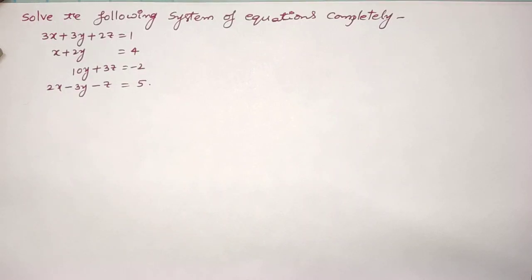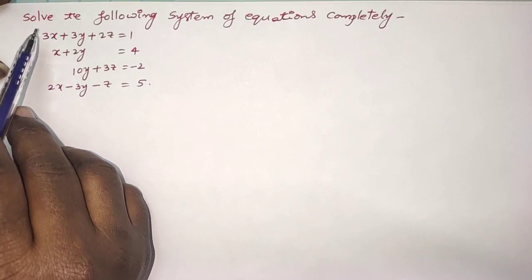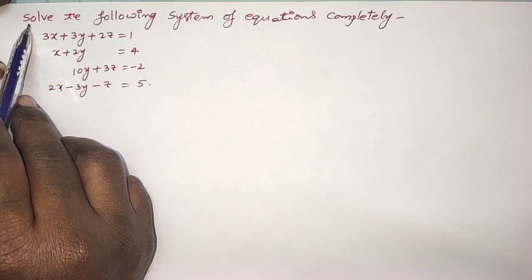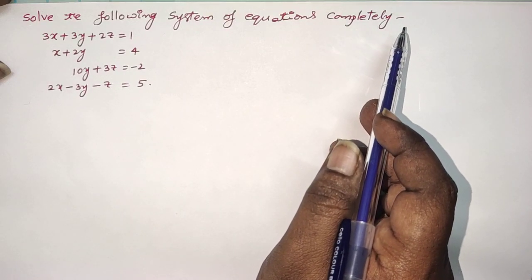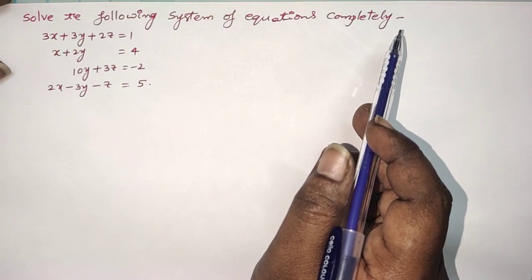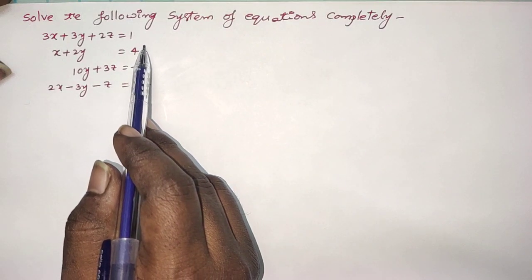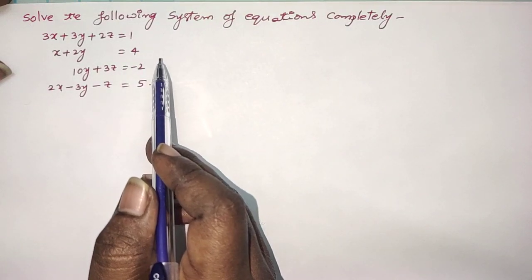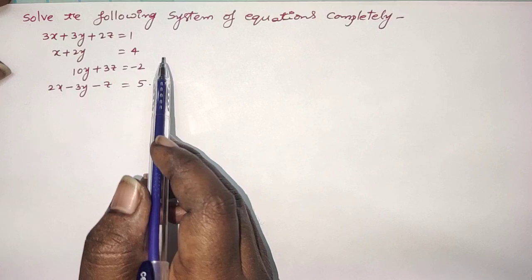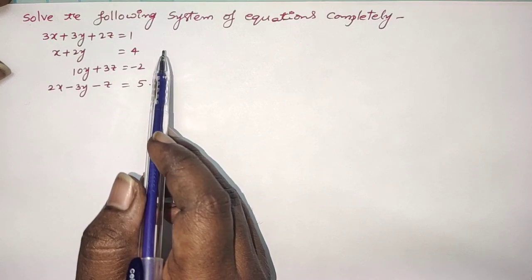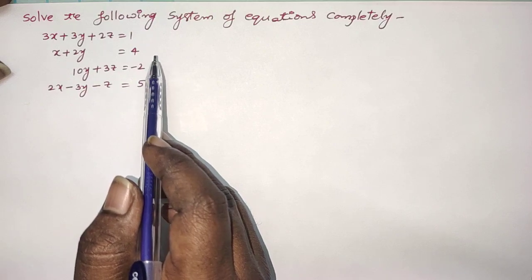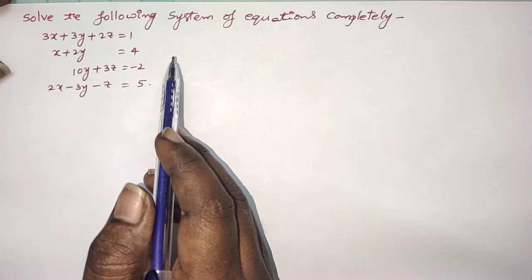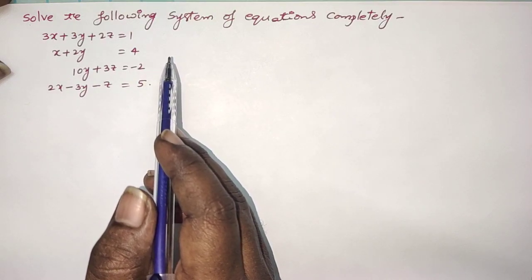Hi everyone, this is another example on systems of non-homogeneous equations. Sometimes a given question says: solve the following system of equations completely. It means first we have to check whether the given system of equations is consistent or not by using the conditions. If the given system is consistent, we have to find out whether it has a unique solution or an infinite number of solutions, and we have to find all solutions.